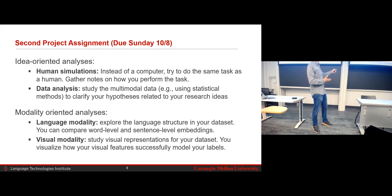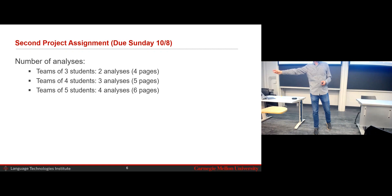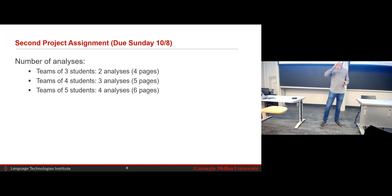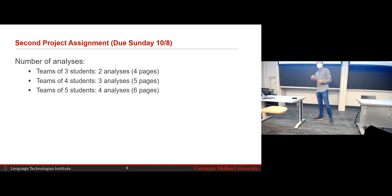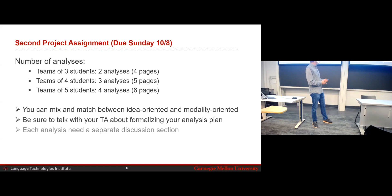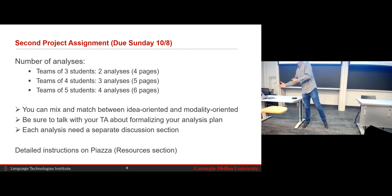For the modality-oriented analysis, either language or visual representation. If you're a team of three, we ask for two analyses; if you're a team of four, it's n minus one. I believe we have teams of two and three. The team of two, if they decide to stay as a team of two, will have to do the work of a team of three — just to be fair with all the other teams. For teams of three, four, and five, it's n minus one in the number of analyses. You can mix and match — you don't have to do all analyses of one type.